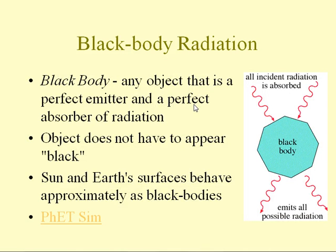The formal definition of a black body: it's an object that is a perfect emitter and absorber of radiation. If you have light falling on an object, it could be absorbed and re-emitted in all directions, probably with a different spectrum of energies.